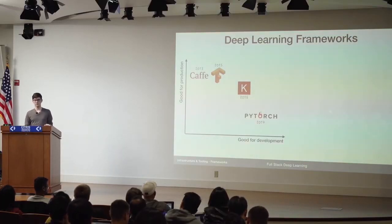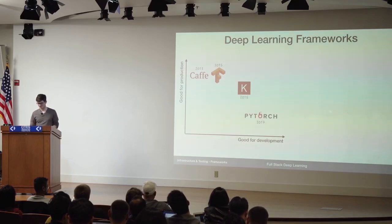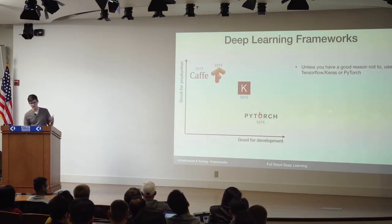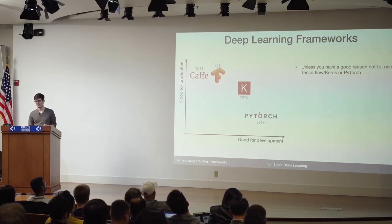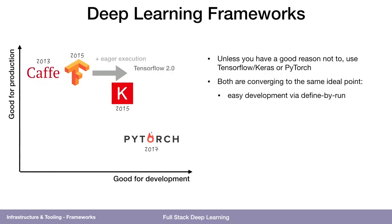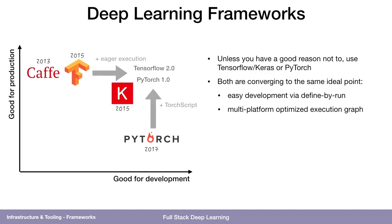People were worried that PyTorch wouldn't be good for production because it was executing this Python code path. But TensorFlow with Keras or PyTorch are clearly the two options — nothing else really makes sense to start with unless you have a very good reason. I think they're both actually converging to the same point. TensorFlow 2.0 added eager execution mode, which is basically the way PyTorch is — you write your Python code, you execute it, and in the process of executing it, it builds the graph that it can then optimize. And PyTorch is converging to the same point by adding an optimized execution graph called TorchScript.